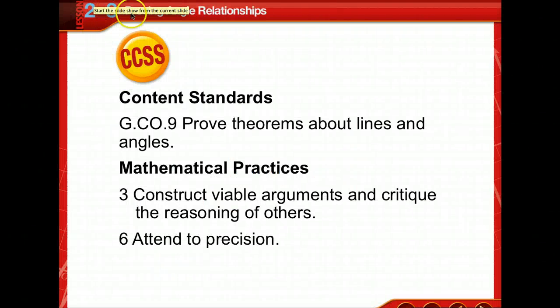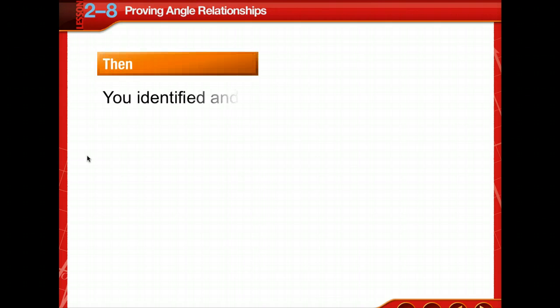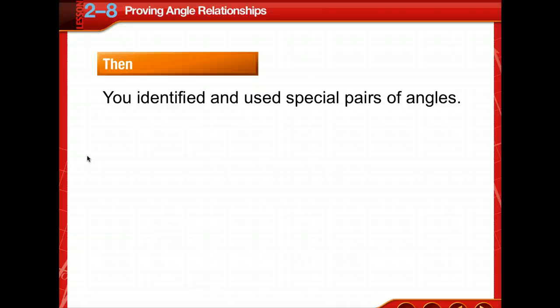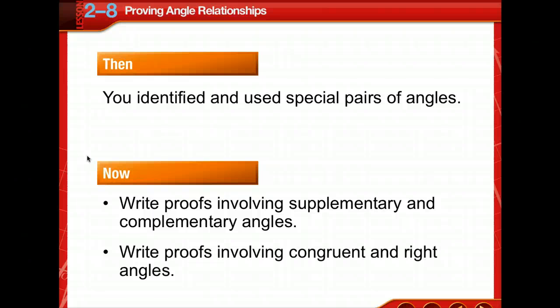Today we're going to be proving angle relationships. This is similar to the segment relationships we did earlier. Previously we've identified and used special pairs of angles back in chapter 1. Now we're going to write proofs involving supplementary and complementary angles and proofs involving congruent and right angles.